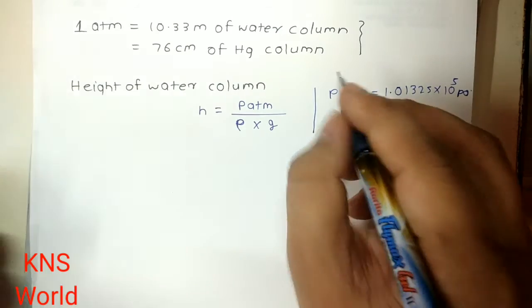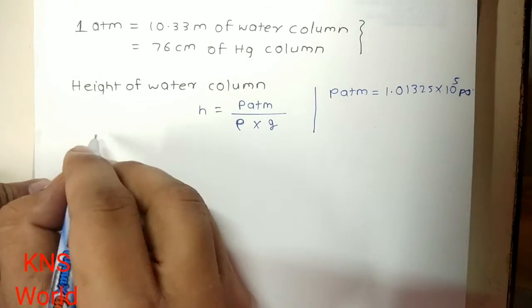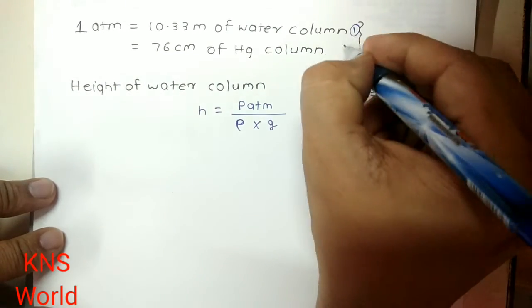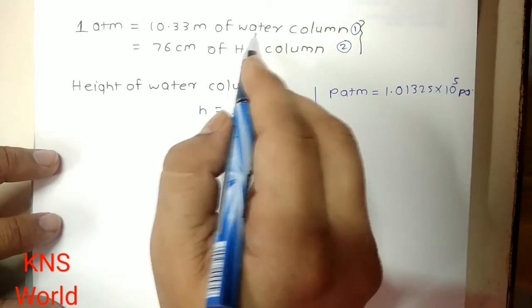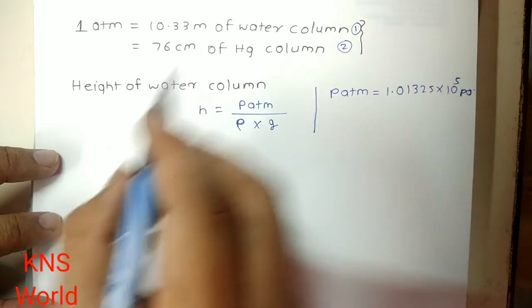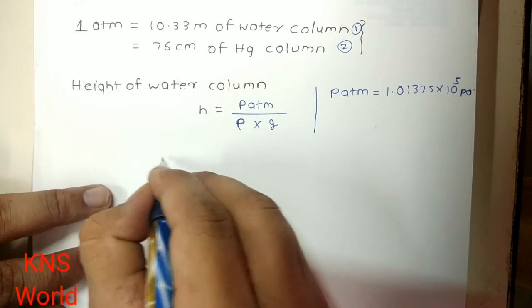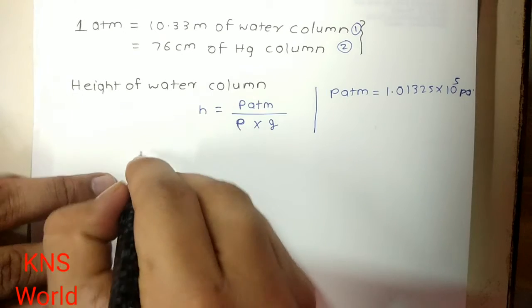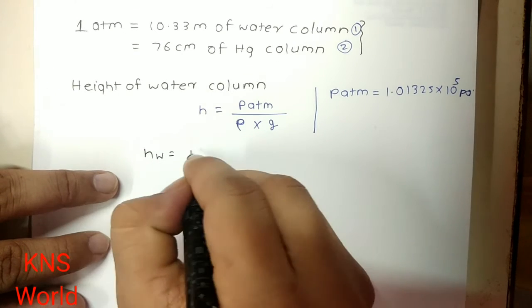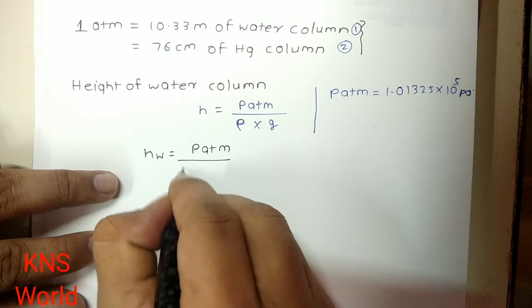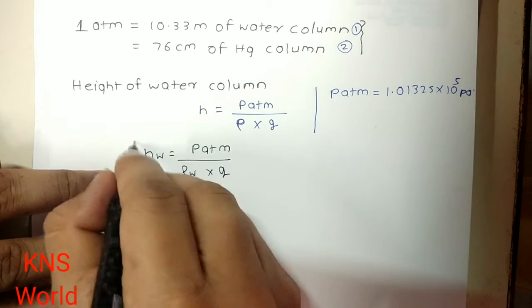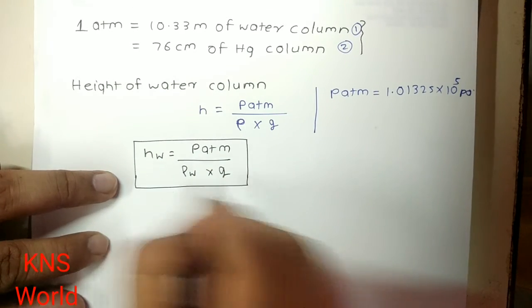After that density. So if you want the first thing, this is the first thing and this is the second thing. So if we want height of water column, then we have to put this formula like this way: H_w, this is for water, P atm upon density of water into g.